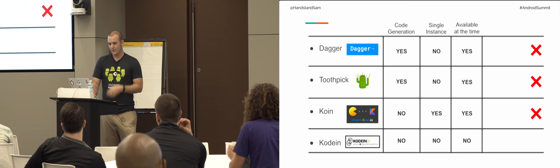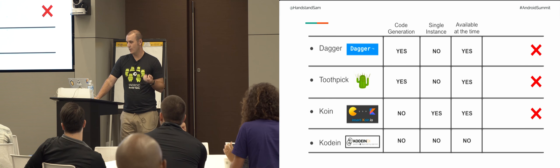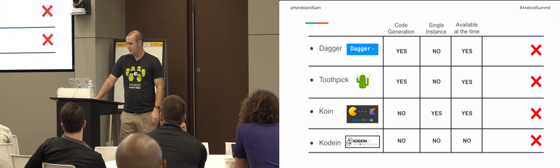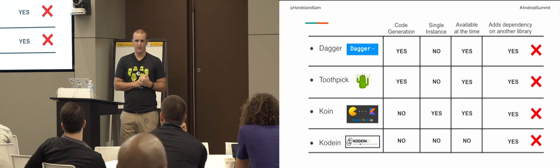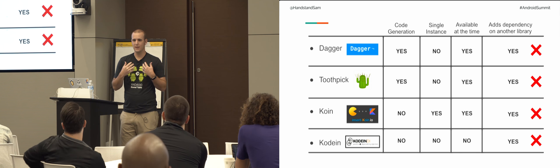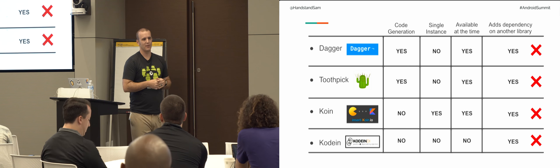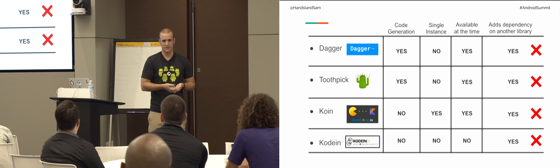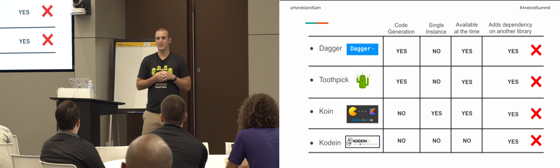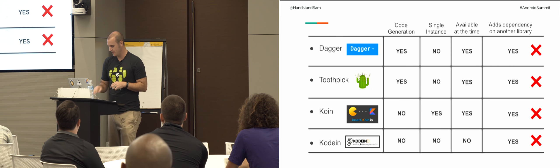Kodein was not available at the time, so we skipped over that. And all of them add another dependency on a library, which is one of our core things — we didn't want to do that. However, I'm a very pragmatic developer. If there's a library that helps you do something that's really hard, you should use it, unless you have somebody paying you to make it a little smaller and do it yourself.